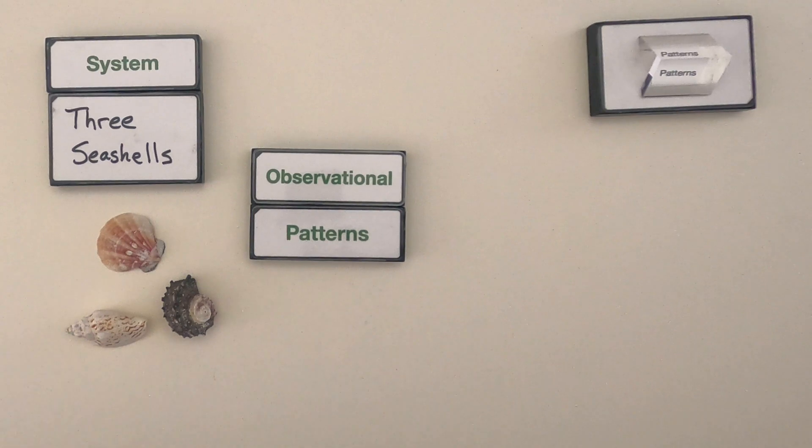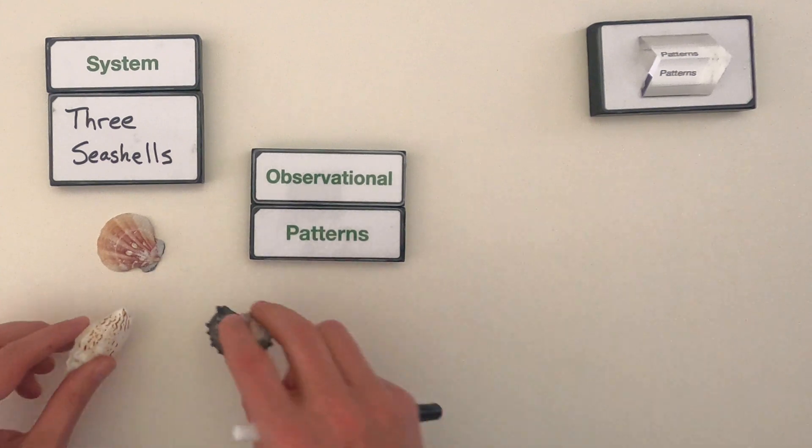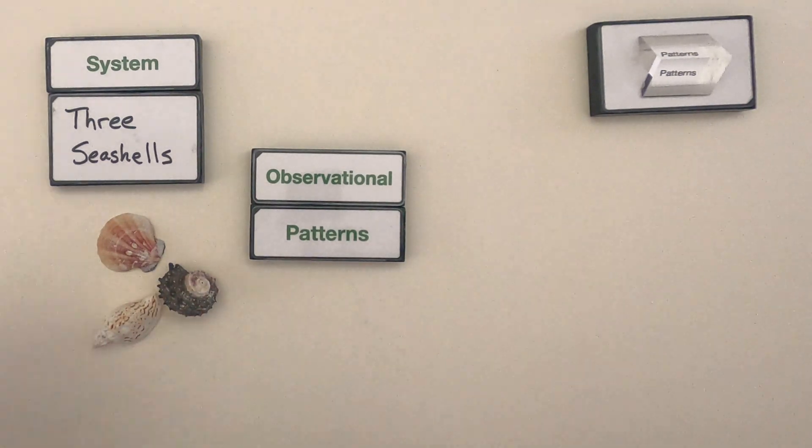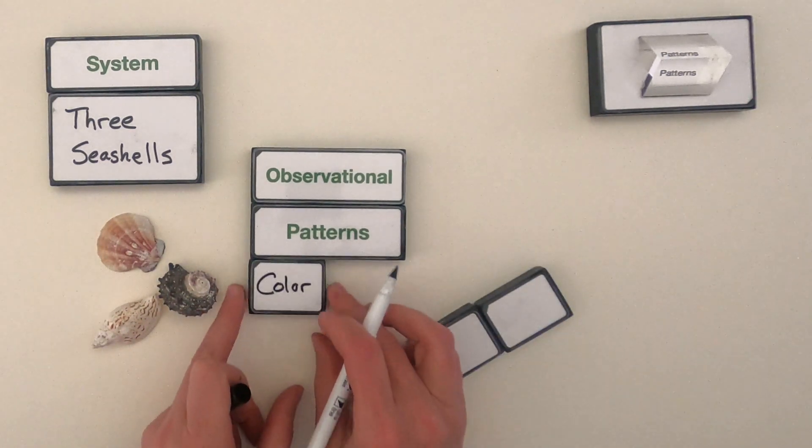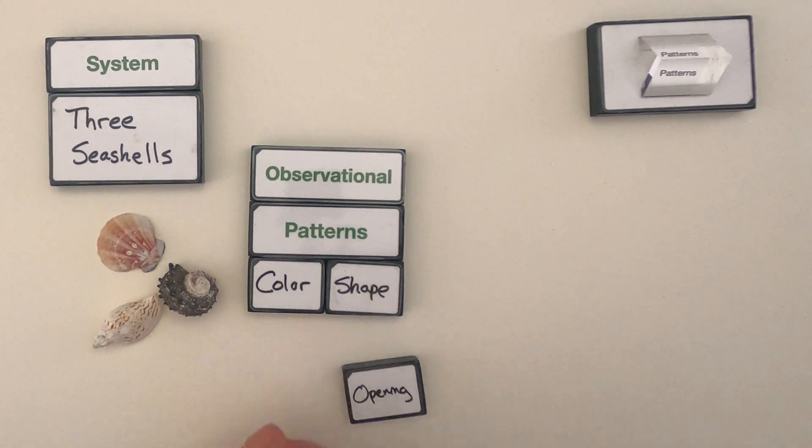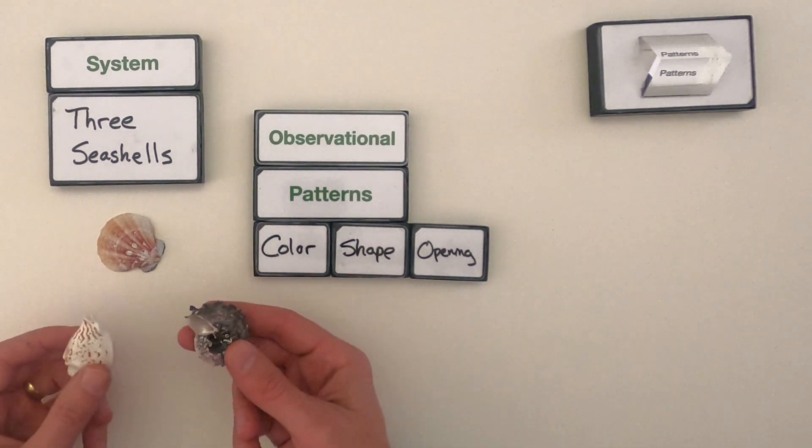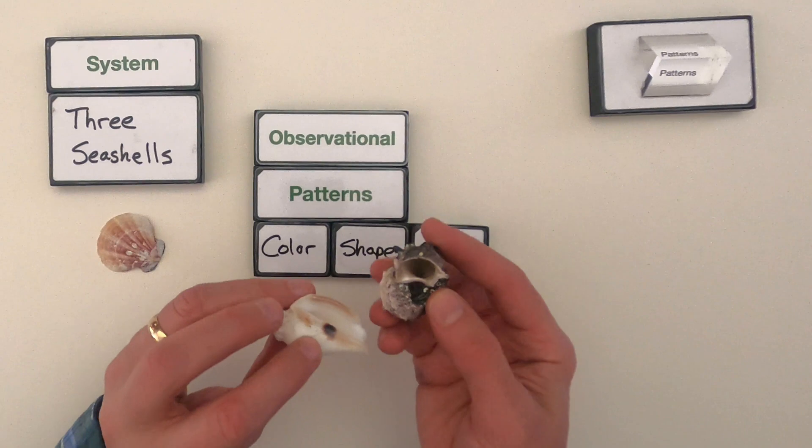Okay, the first thing I would do is write down the observational patterns that I can see just using vision. That's the first thing that I would do. The first thing I notice is that they have different colors, they have different shapes, and then a couple of them have openings.